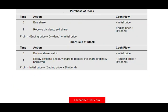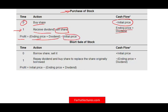Normally, when you buy a stock at time zero, you have a negative cash flow. Later, you receive a dividend and sell at the ending price, so your profit is the ending price plus the dividend minus what you paid. For example, if you paid $100, received $2 in dividends, and sold for $105, your profit is $7. When you short a stock, it's the opposite.